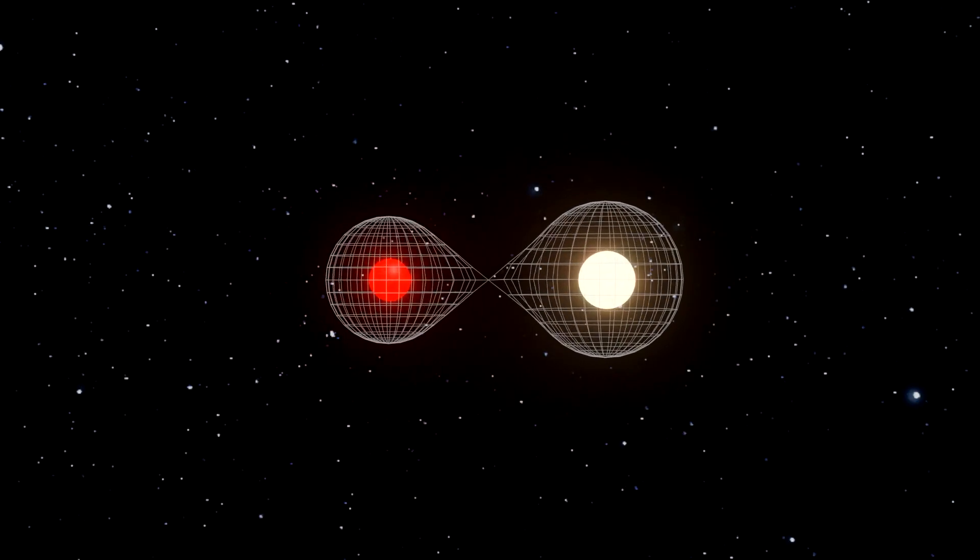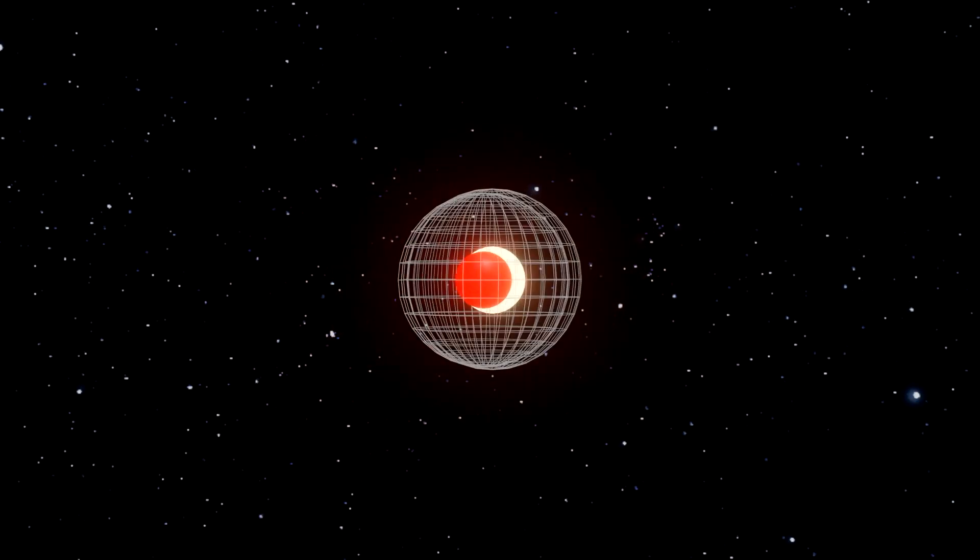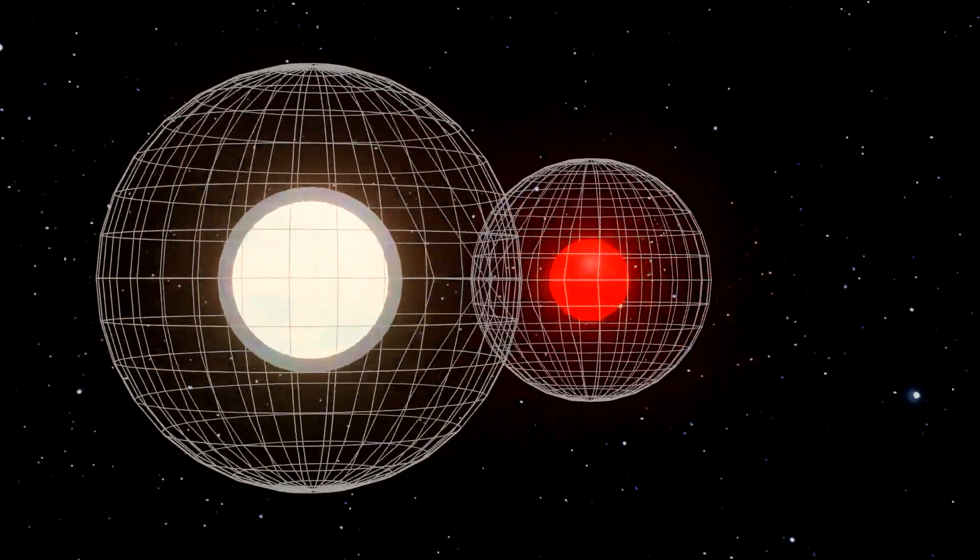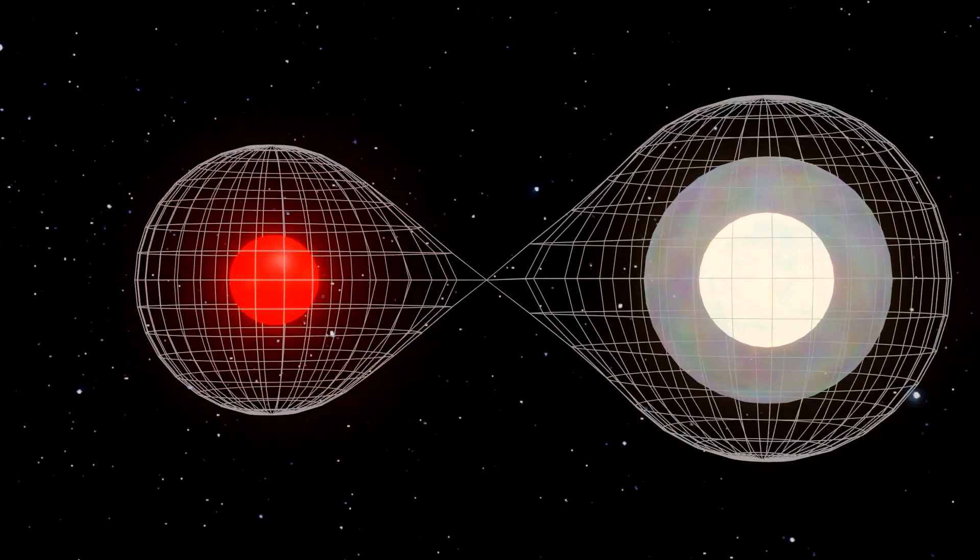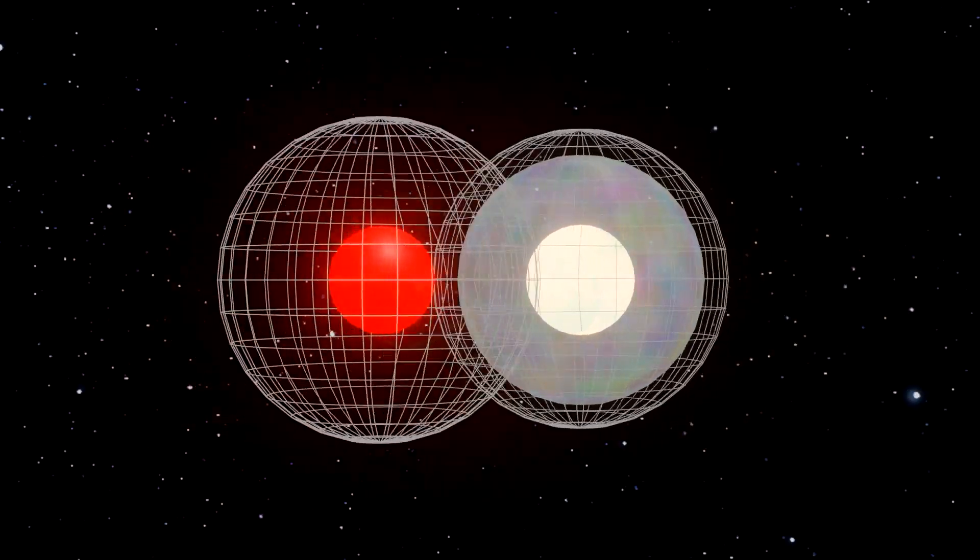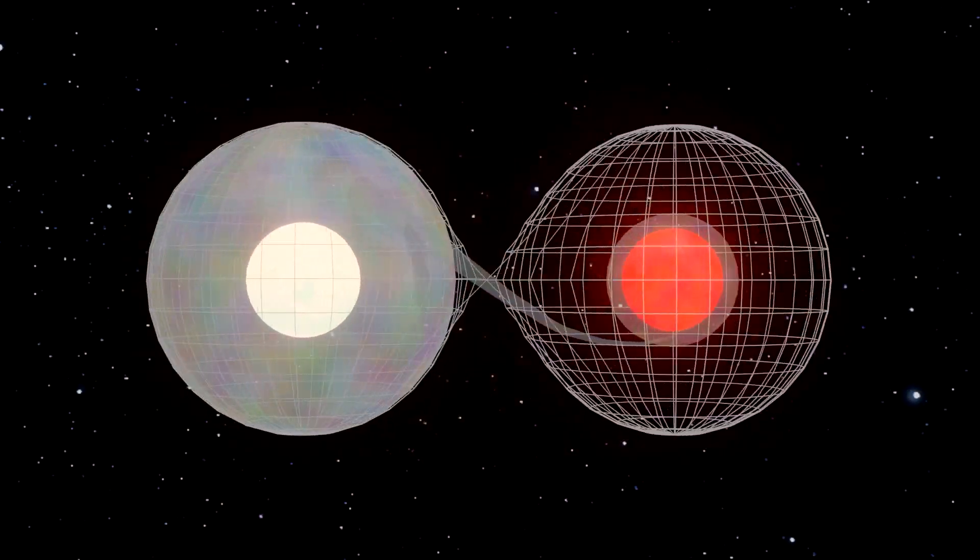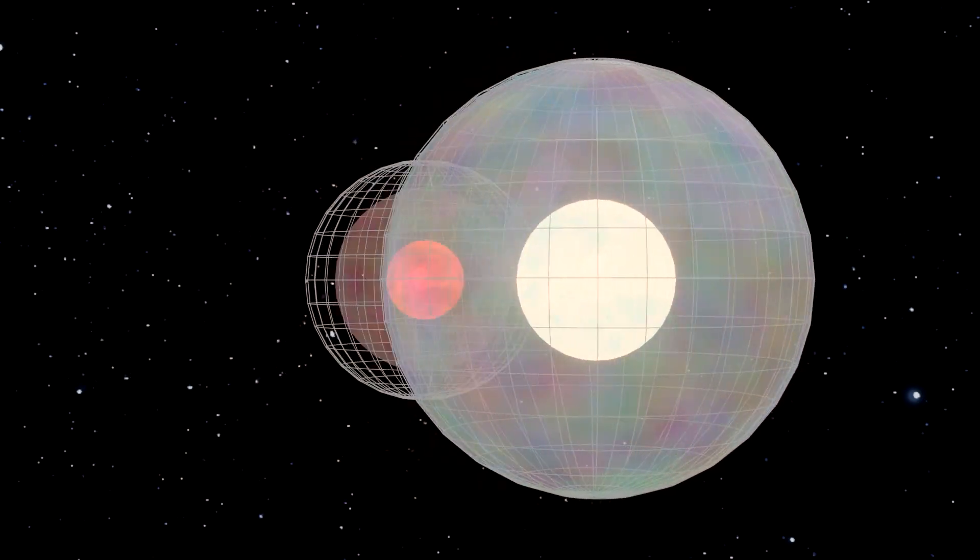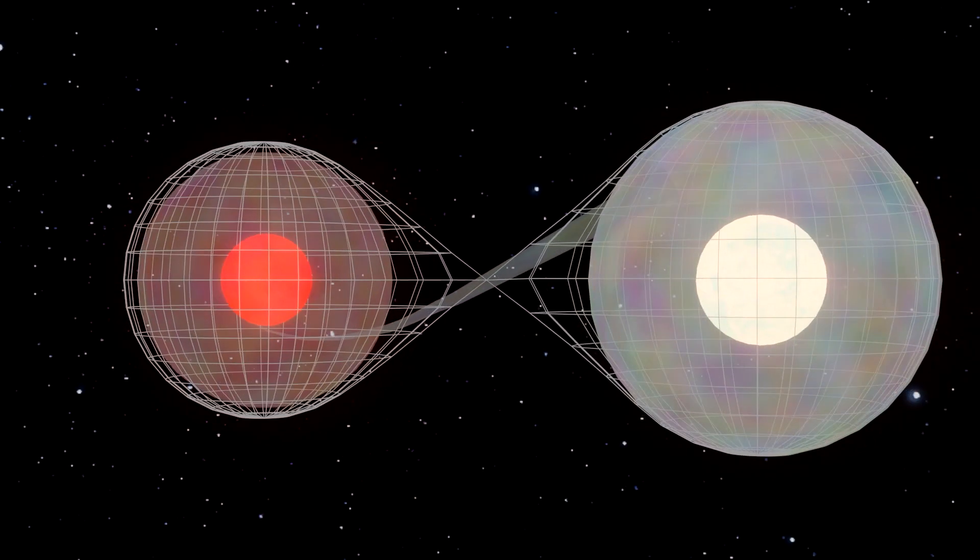Binary stars have Roche lobes, an almost teardrop shaped region surrounding each star, within which all material orbiting that star is gravitationally bound to that star. Typically, when one of the stars exceeds their Roche lobe, that is to say its surface extends out beyond its Roche lobe, then the material which is outside of this region will fall onto the other star's Roche lobe.